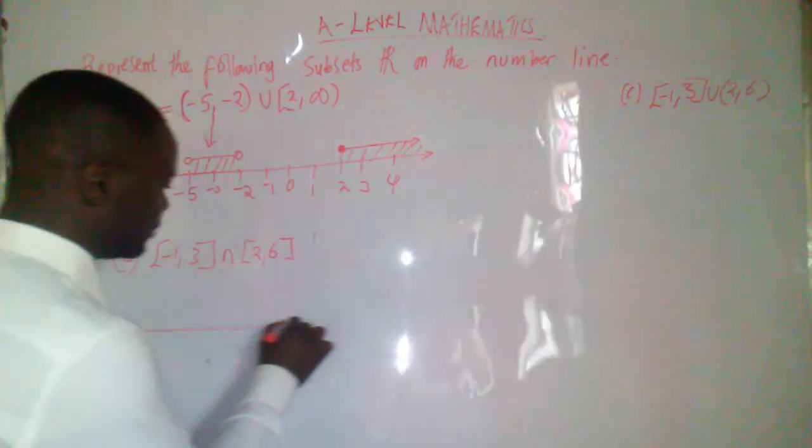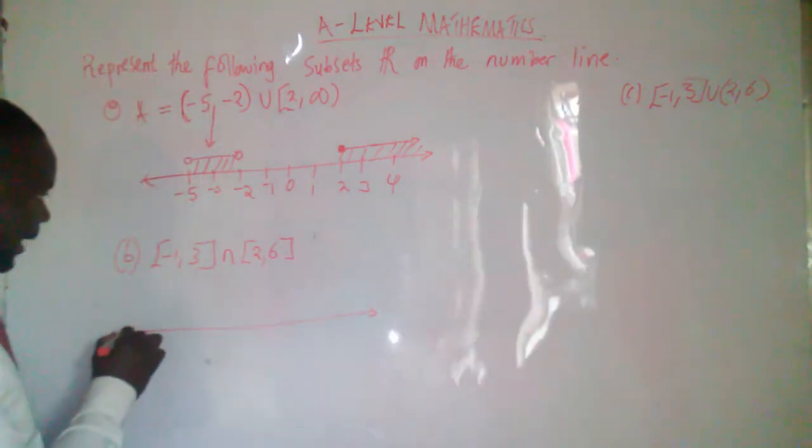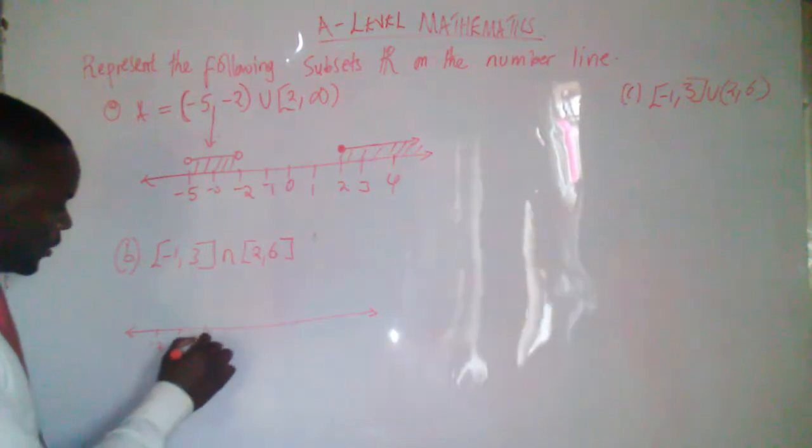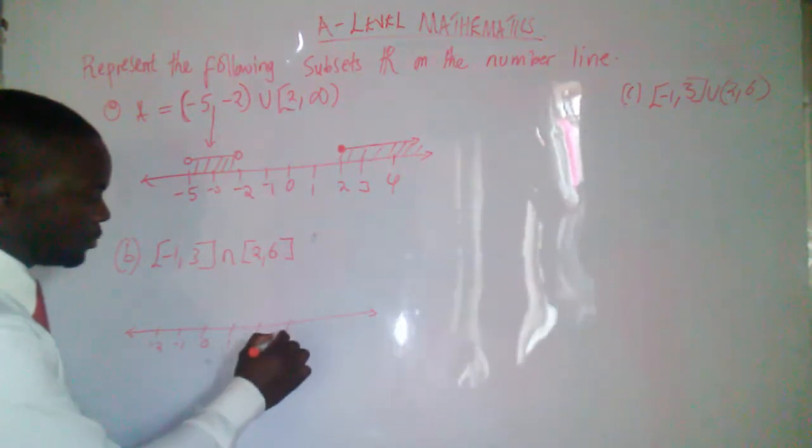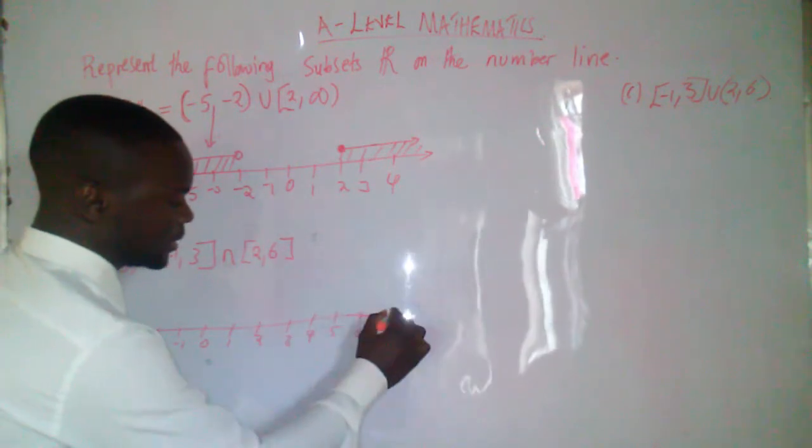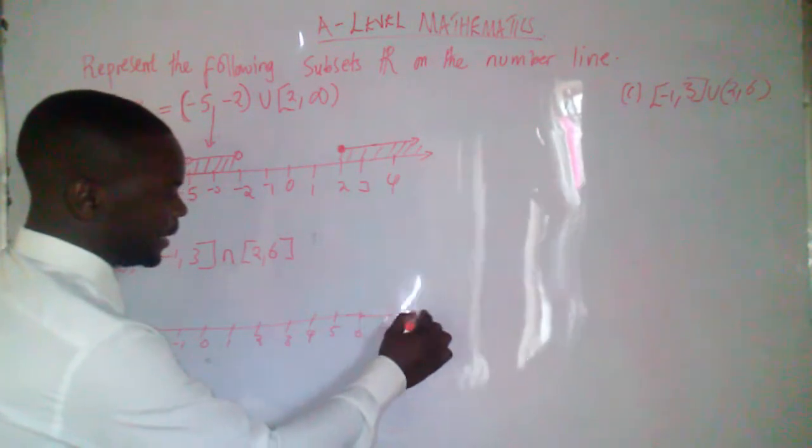B, let me as well draw the number line. So it will start at negative 2, negative 1, 0, 1, 2, 3, 4, 5, 6, 7 like this.